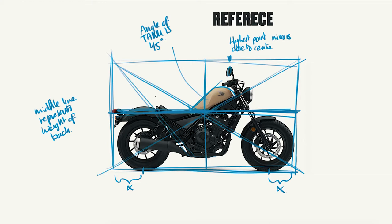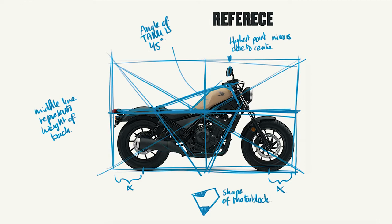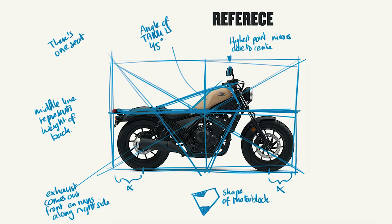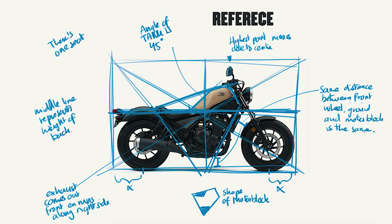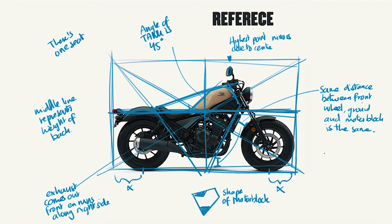The angle of the tank is about 45 degrees. The motor block seems very difficult to analyze, but if we simplify it, it's basically a shape with some parts cut off. The exhaust goes on the right side of the motor and comes out the front. There's one seat, and the distance between the front wheel and the motor is almost the same as the distance from the bottom of the motor block to the ground.